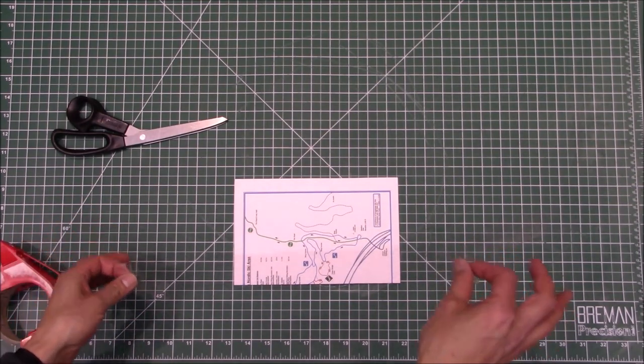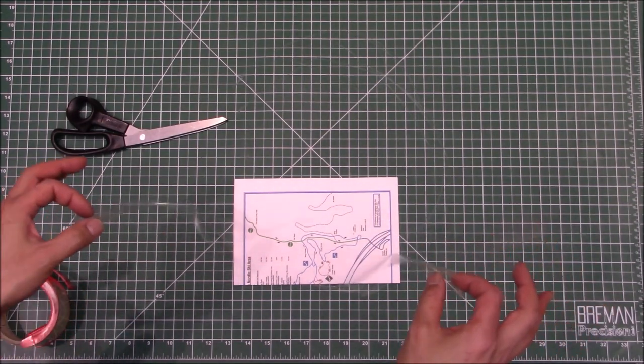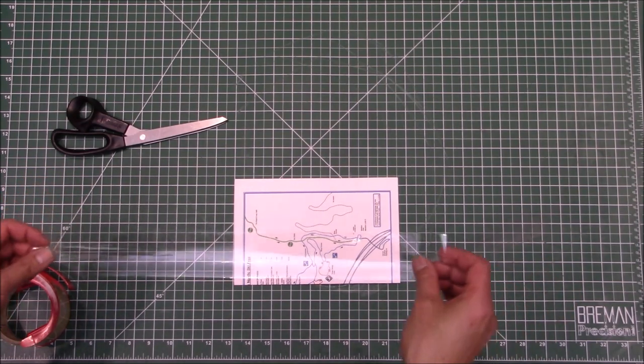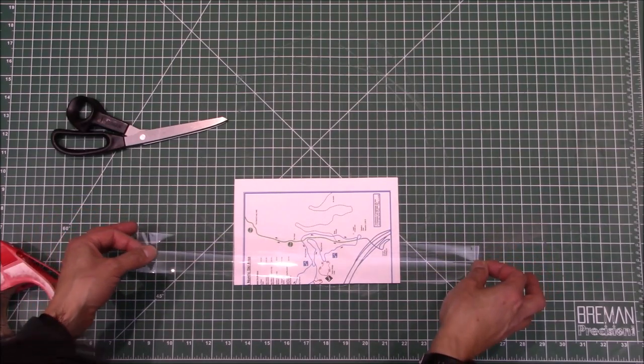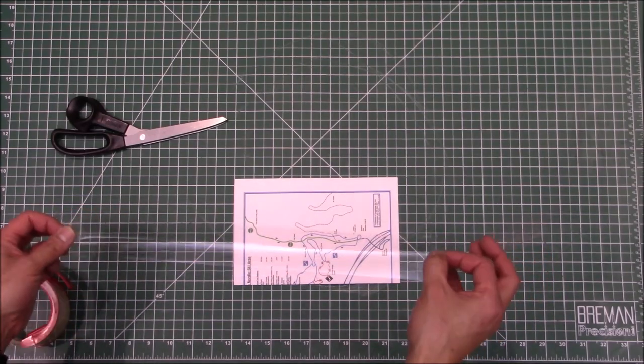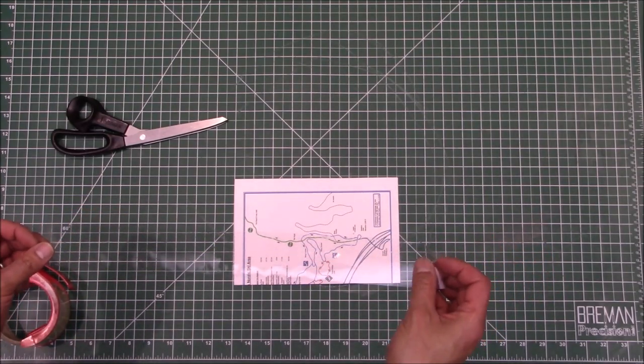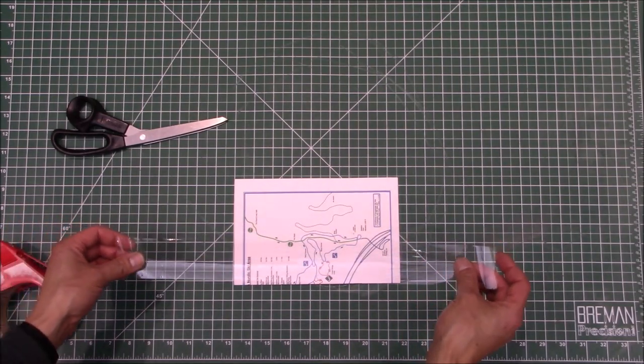Now one thing that I have noticed is that sometimes when you pull this packing tape out, it's got a little bit of static electricity. If you have a smaller document like a business card or something like that, as you bring this tape closer to it, it has a tendency to suck up the document. So you just have to be a little bit careful of how you place this strip.